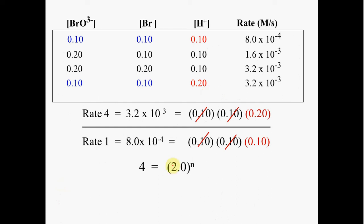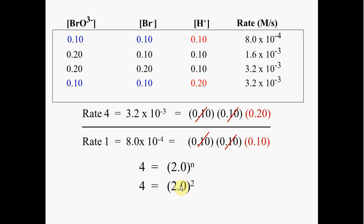After working it out yourself, you can see that this relationship is different from what we've seen previously. Here the rate changes by a factor of 4 while the concentration has only doubled — this is a second order or square relationship. As hydrogen concentration was doubled, the rate actually quadrupled, showing that hydrogen concentration has a much larger effect on the rate than a first order reactant.